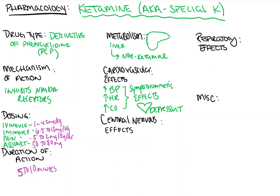As far as the central nervous system goes, it used to be thought that ketamine led to an increase in ICP — intracranial pressure — but recent studies have found it may actually reduce ICP, and as a result may be beneficial in patients with brain lesions or bleeds. It should also be known that ketamine may lead to myoclonus, or myoclonic jerks, which are quick involuntary muscle jerking. It can also be used as an anti-seizure medication, but really only as a very last resort when all other medications fail.